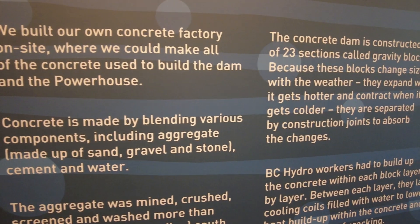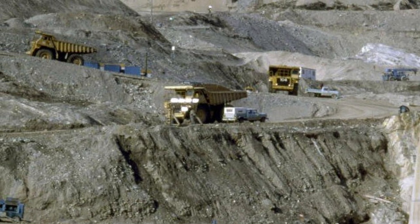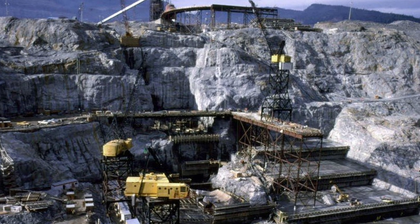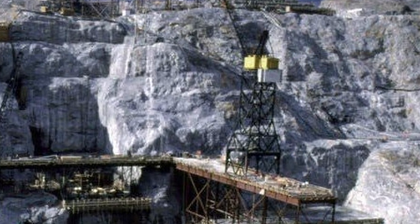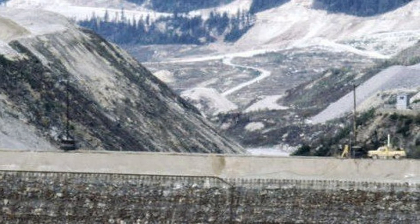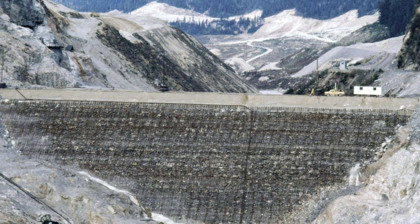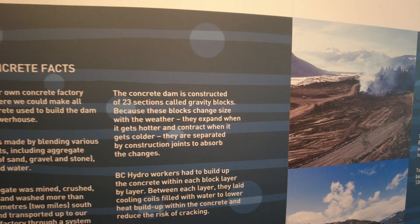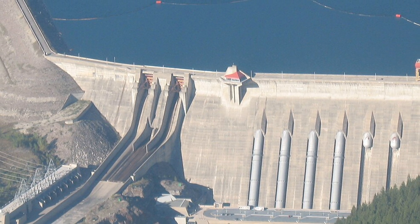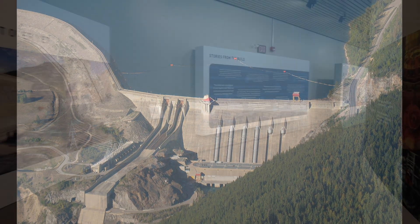They built their own concrete factory on site. Concrete is made by blending aggregate - sand, gravel, stone - cement, water, and lime. Romans put lime in their concrete and it was way better because it's self-repairing. The aggregate was mined, crushed, screened, and washed more than 3 kilometers south and transported via tunnels and conveyor belts. They hauled an average of 500 tons of cement from Kamloops - over 200 kilometers away - every work day. The concrete dam is constructed in 23 sections called gravity blocks. These blocks expand and contract with temperature changes and are separated by construction joints. Workers had to build up the concrete layer by layer, laying cooling coils filled with water between each layer to lower heat buildup and reduce cracking risk, because concrete produces heat as it cures.